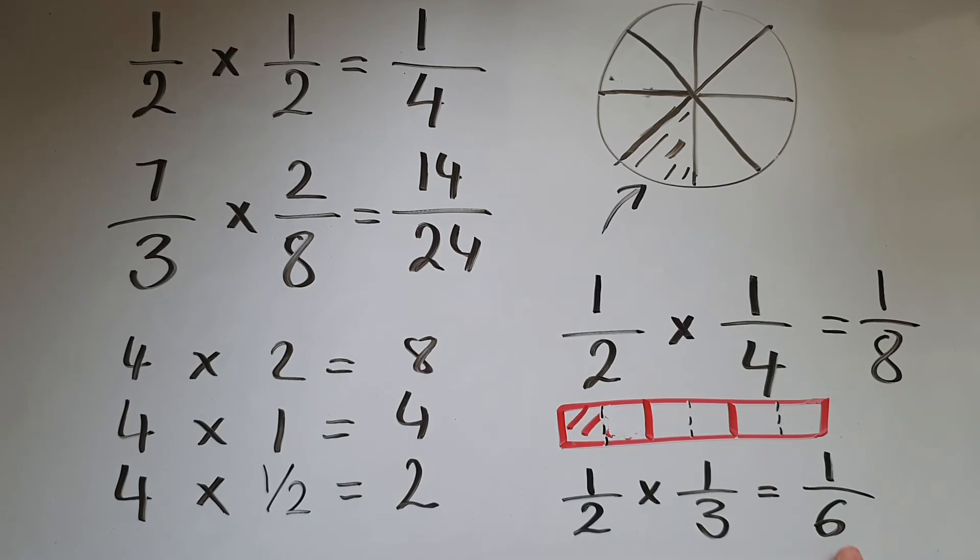Because fractions are always split into equal slices. Fractions always represent equal slices. If you haven't got equal slices, you haven't got a fraction.